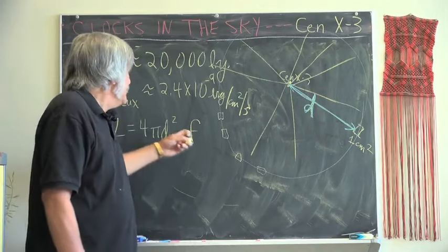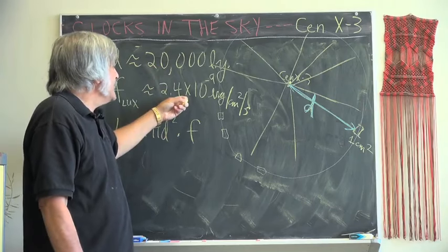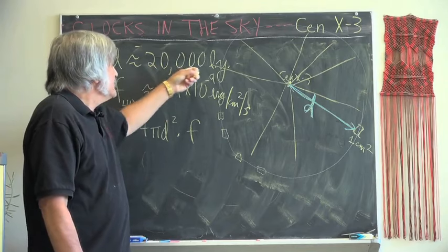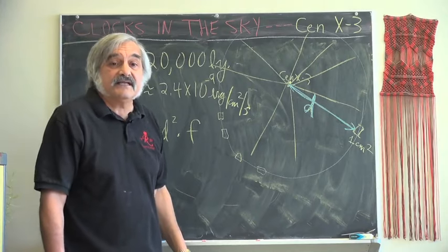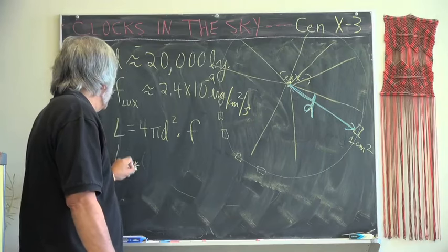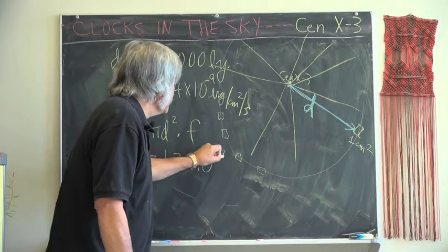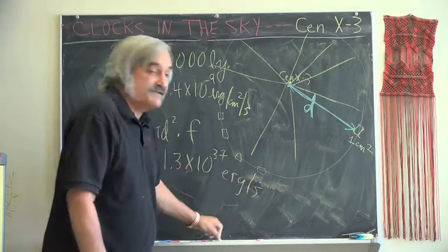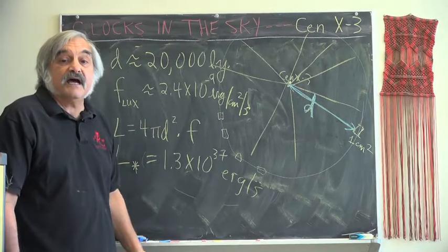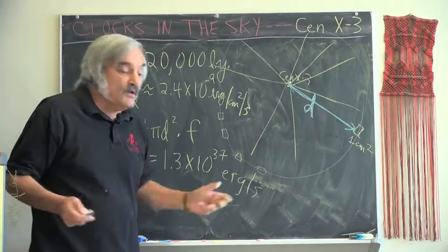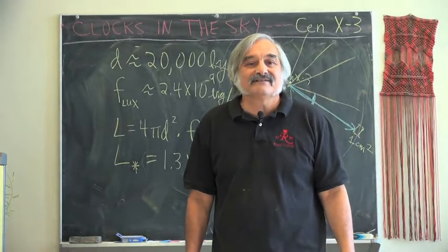Thus, the luminosity is L equals 4πd² times the flux. And if we do that, d is 20,000 light years, we multiply our flux by the centimeter equivalent of 20,000 light years. And if you do that, converting light years to centimeters, you get the luminosity of CENX3 is about 1.3 times 10³⁷ ergs per second. This is about 3,000 times the entire energy output of the sun.